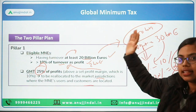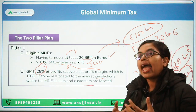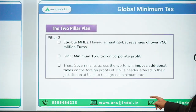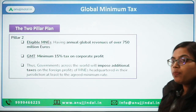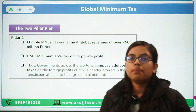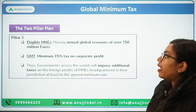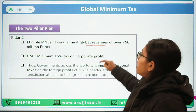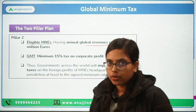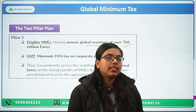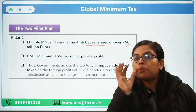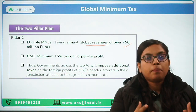So this is Pillar One under the global minimum tax as proposed by OECD and G20. Moving forward to Pillar Two — Pillar Two covers multinational corporations having an annual global revenue or turnover over 750 million euros. Now when you have seen Pillar One, the eligibility criteria was 20 billion euros, which is a very big amount.